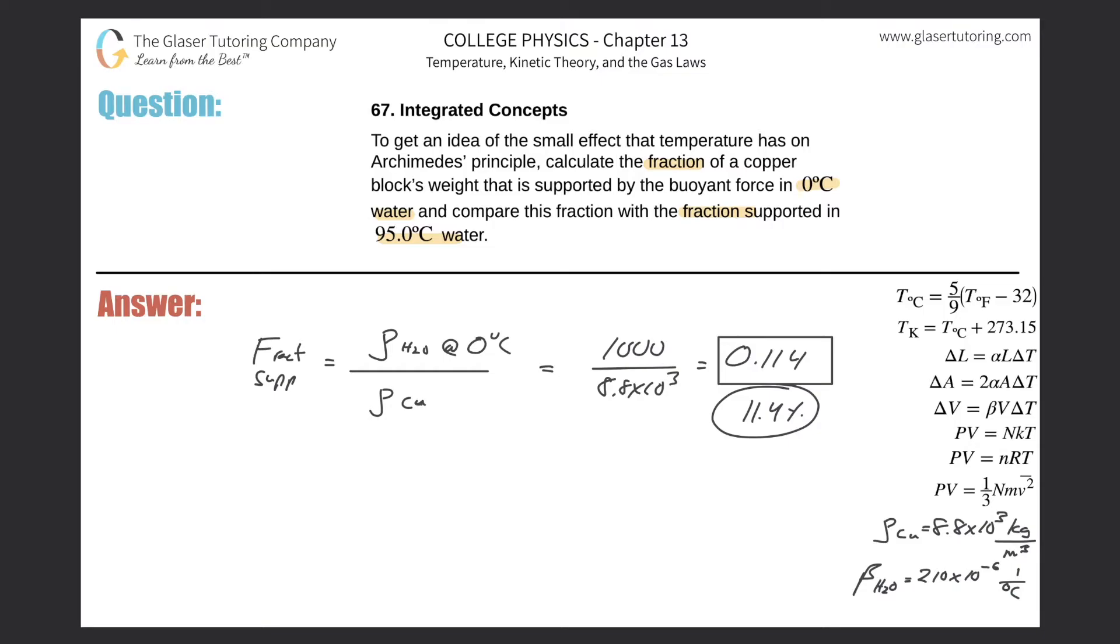Now we would do the same analysis for the water at 95 degrees Celsius. The fraction supported would be equal to now the density of water at 95 degrees Celsius divided by the density of copper. The problem now is we can, in terms of practicality, use the value of 1000 as the density of water at 95 degrees Celsius.